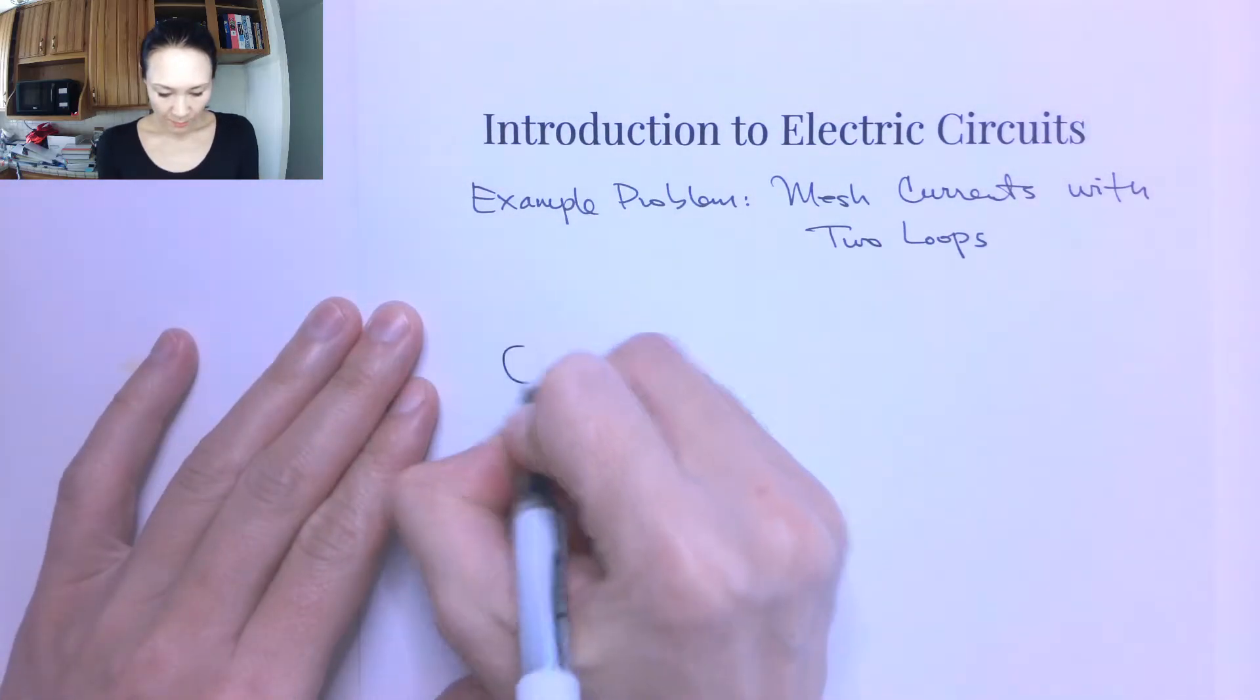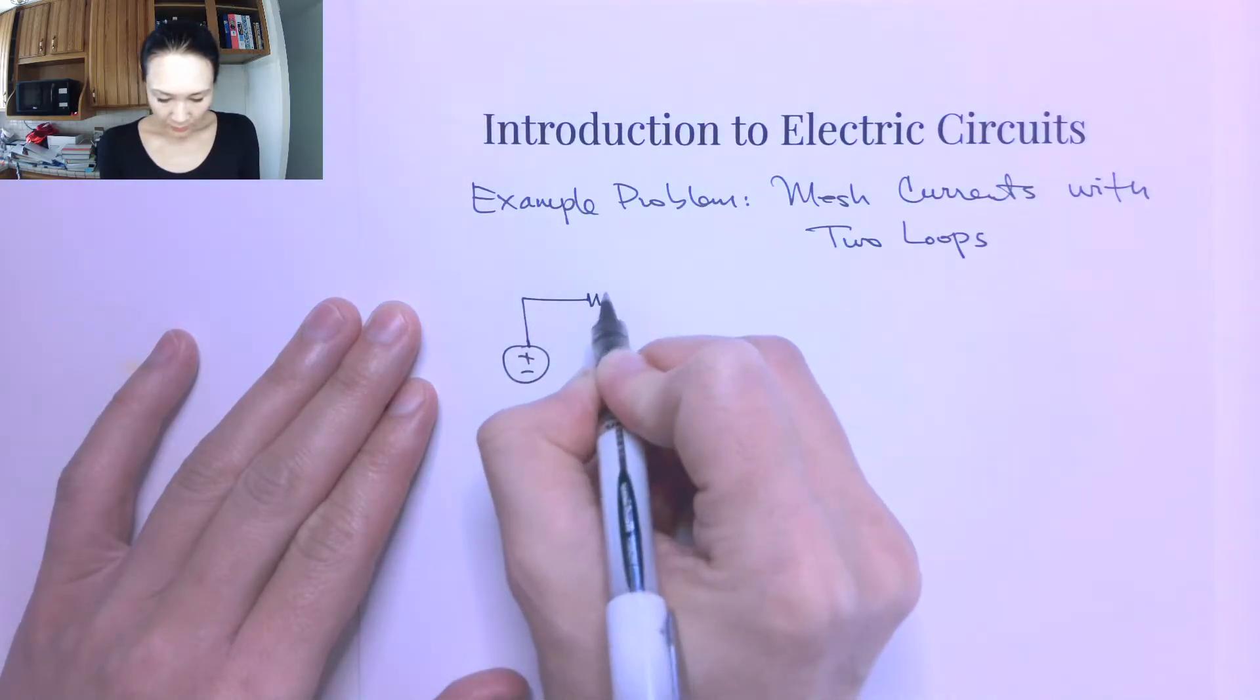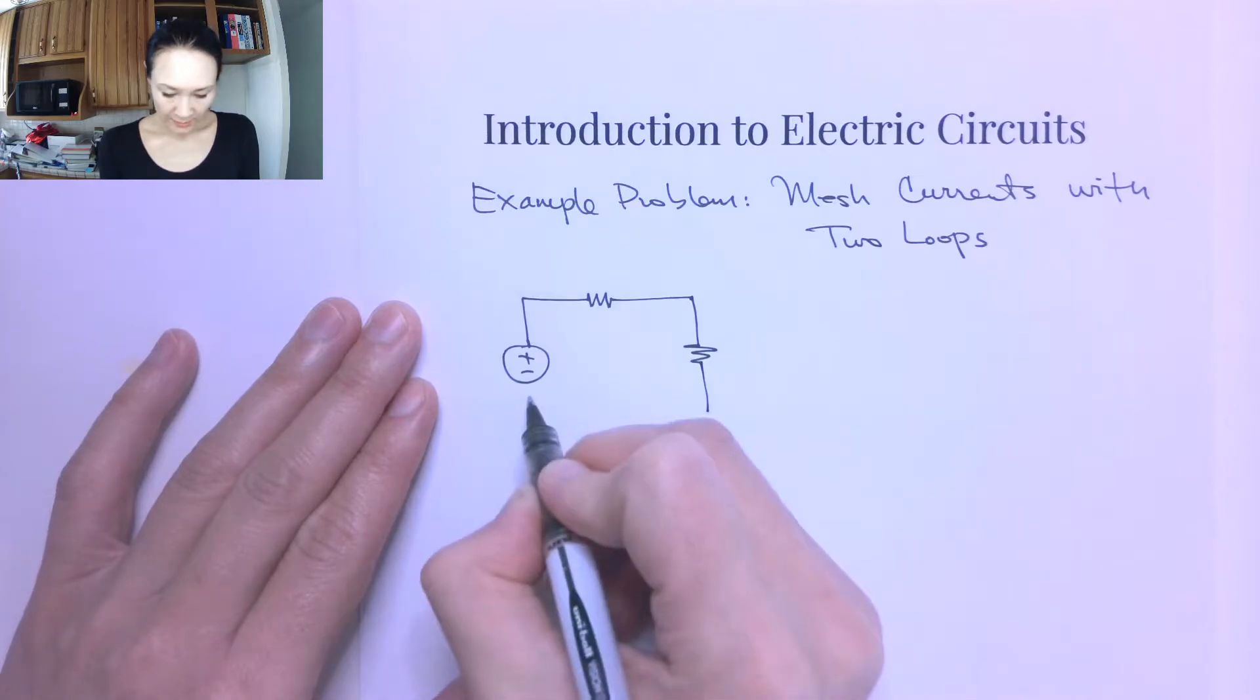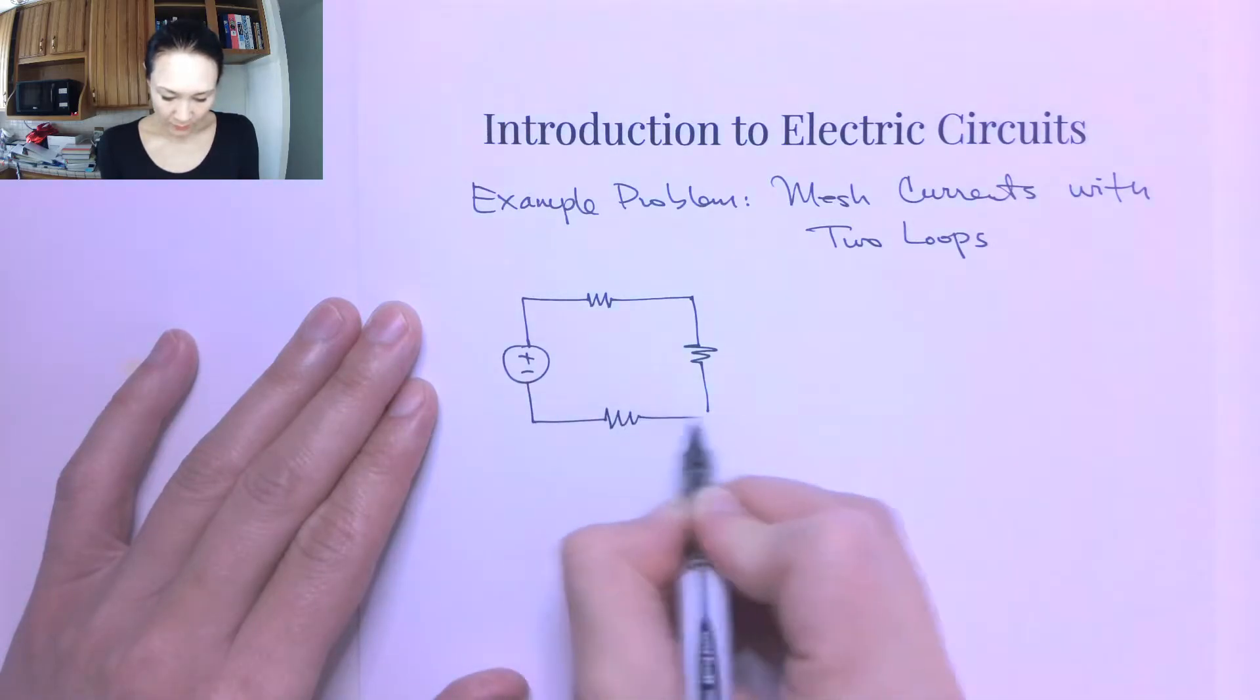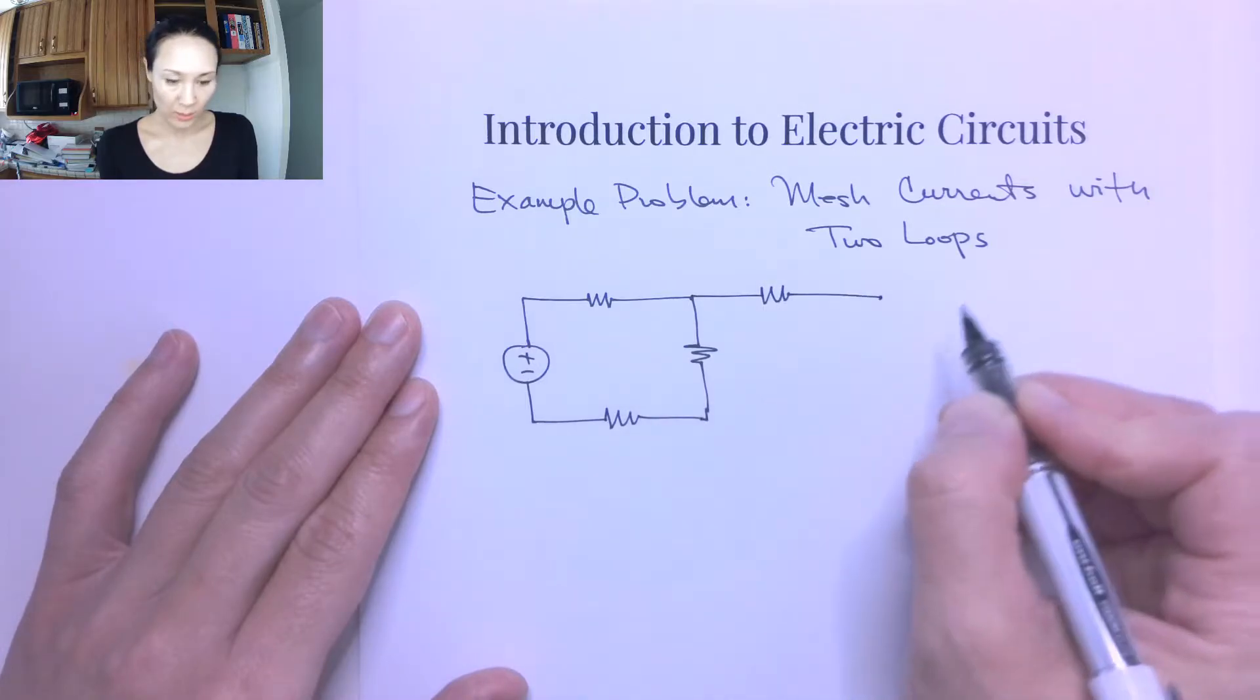Okay, let me show you an example of a problem that we might use mesh currents to solve. Just to begin with, we'll do an example that has two loops, and then in the next video I can show you a circuit that has three loops.